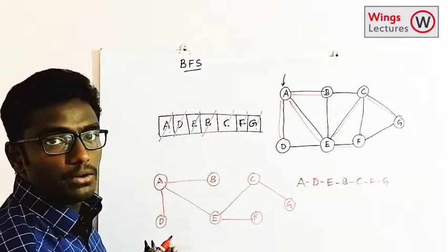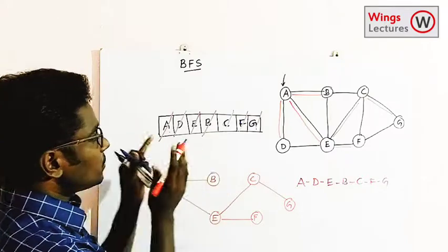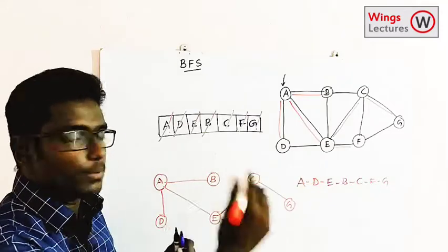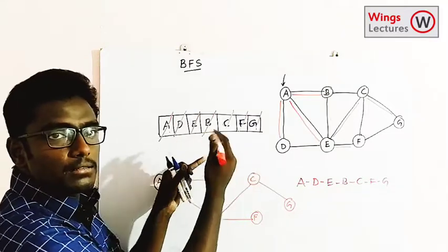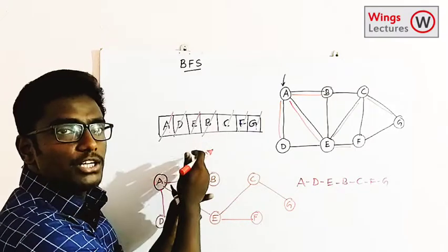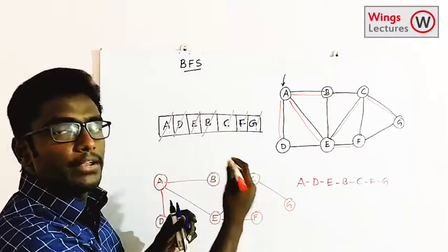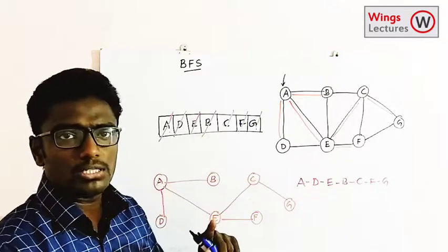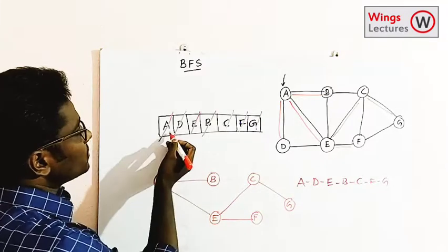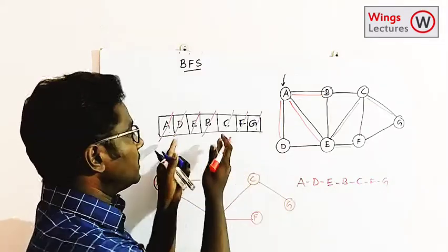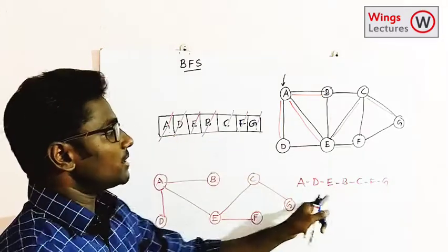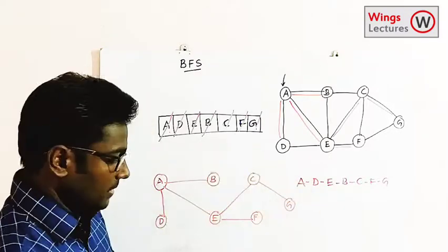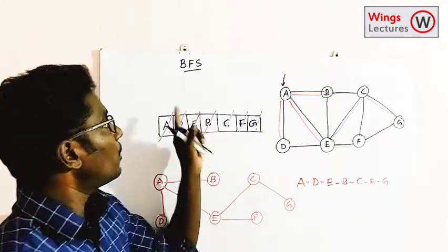The BFS method is simple: first find the source vertex, then find adjacent vertices one by one and insert them into the queue. After visiting each vertex, print its value. Since a queue follows FIFO, the insertion order and output order are the same. That's BFS — next we'll look at Depth First Search.